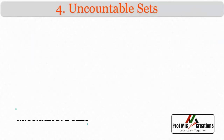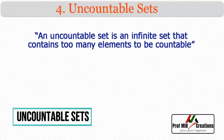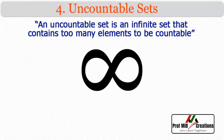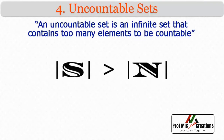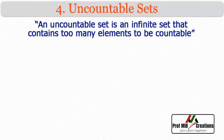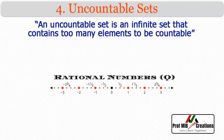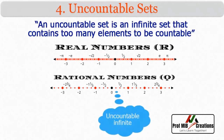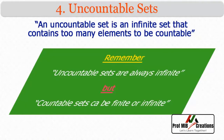Next is uncountable sets. An uncountable set is an infinite set that contains too many elements to be countable. The uncountability of a set is closely related to its cardinal number. A set is uncountable if its cardinal number is larger than that of the natural numbers. For example, the set of rational numbers or the set of real numbers are uncountable. Remember: uncountable sets are always infinite, but countable sets can be finite or infinite.